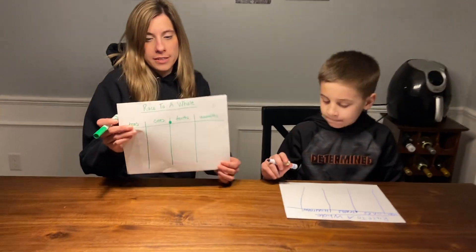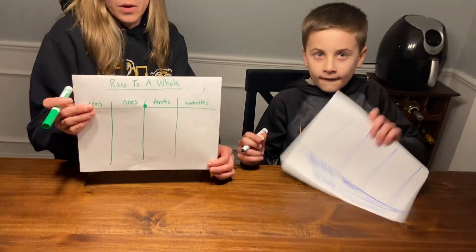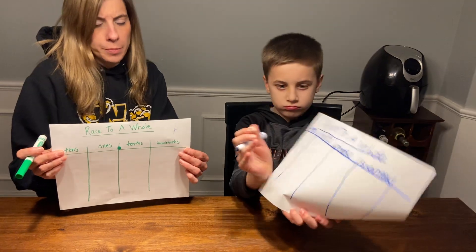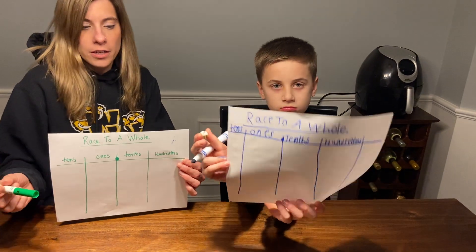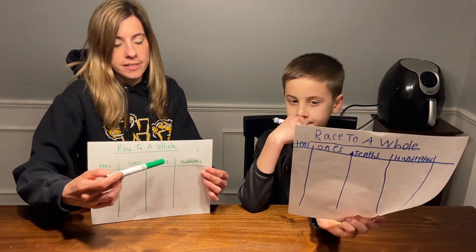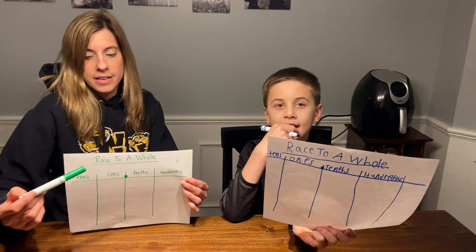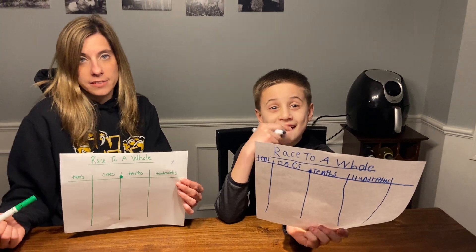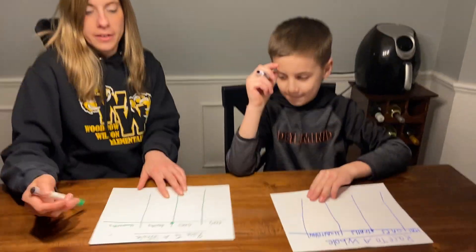Hi fifth graders! I'm here with Ryder and we're going to show you a simple place value game that you can play at home that will remind you that our math system moves in groups of 10. We each made our own game board called Race to a Whole, and we made a simple place value chart where we have hundredths, tenths, a decimal point, ones, and tens. We're going to show you how to play.